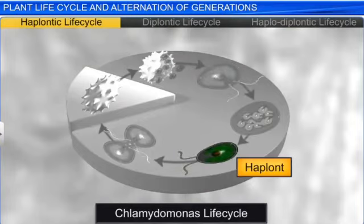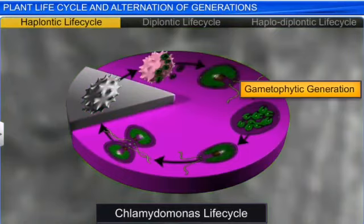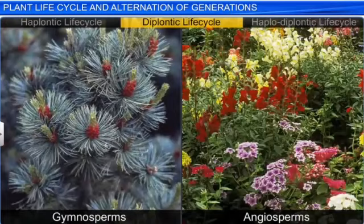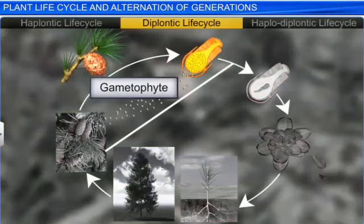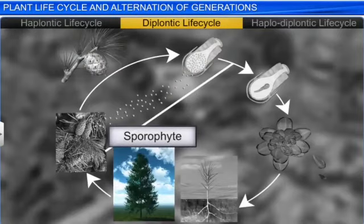In case of the diplontic life cycle, the diploid sporophyte is the dominant one. The diplontic life cycle is found in gymnosperms and angiosperms. The diploid sporophyte is the dominant, photosynthetic, and independent phase of the plant, while the gametophyte phase is represented by single to few-celled haploid gametophytes. This kind of life cycle is said to be the diplontic. Fucus species represents this pattern. In addition, all seed-bearing plants — that is, gymnosperms and angiosperms — follow this pattern with some variations.